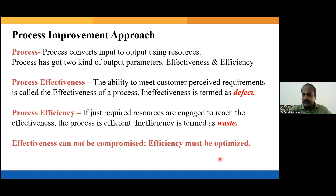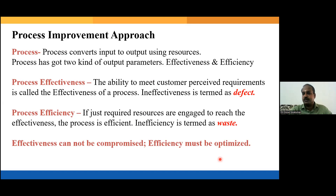Six Sigma ensures you produce defect-free products; Lean ensures your process is efficient enough. We take care of the customer requirement, which is the effectiveness part, and we also take care of the business requirement, which is the efficiency part. In any business, effectiveness can never be compromised because customers cannot tolerate any non-conformance.